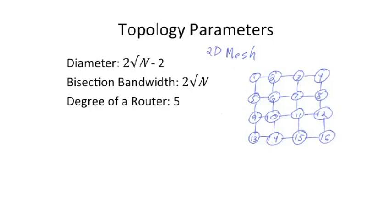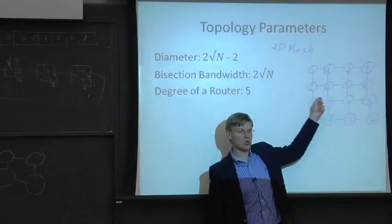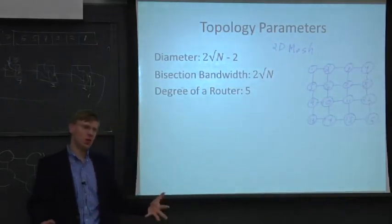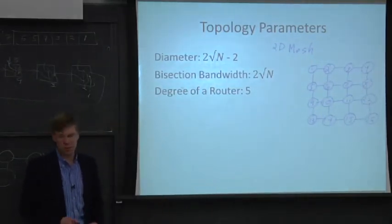And our degree of our router, if we assume that there is an entity that is sitting at these nodes that has to communicate into the router, is going to be 5. And if you look at just the network itself, it's going to be 1 less than that, or 4.